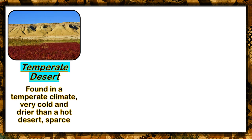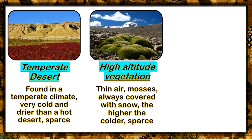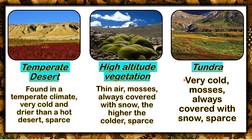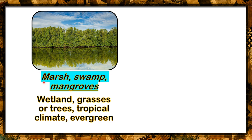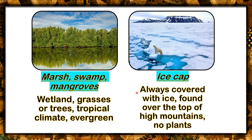Temperate deserts are found in the temperate climate — very cold and drier than hot deserts, sparse. High altitude vegetation — thin air, mosses, always covered with snow; the higher, the colder, sparse. Tundra — very cold, mosses always covered with snow, sparse. Marsh, swamp, and mangroves — wetland, grasses or trees, tropical climate, evergreen. We have this in Thailand because we are near the equator. Ice cap — always covered with ice, found over the top of high mountains, no plants.